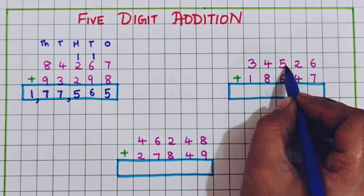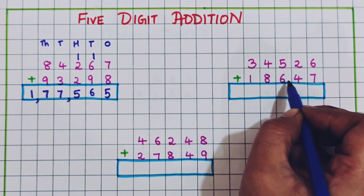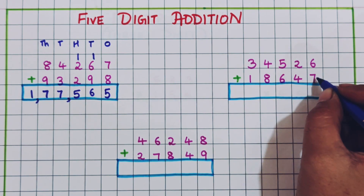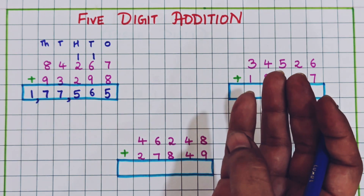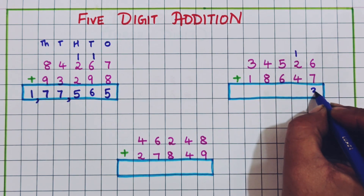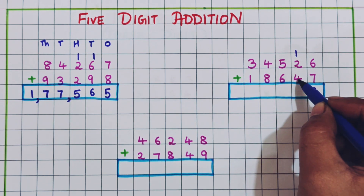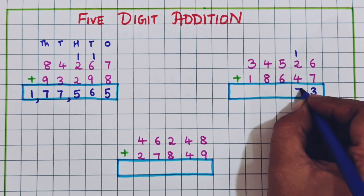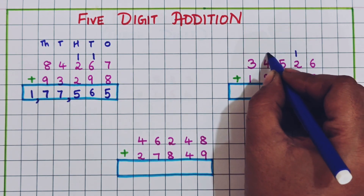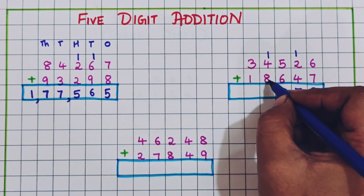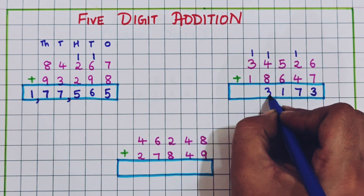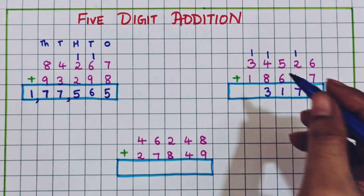Next: 34,526 plus 18,647. Starting with the ones place: 7 plus 6 — 8, 9, 10, 11, 12, 13 — so 13, write 3 and carry 1. Now 4 plus 2 is 6, plus 1 is 7. Then 6 plus 4 is 10 — write 0 and carry 1. Next, 5 plus 8 is 13, so write 1 and 3.